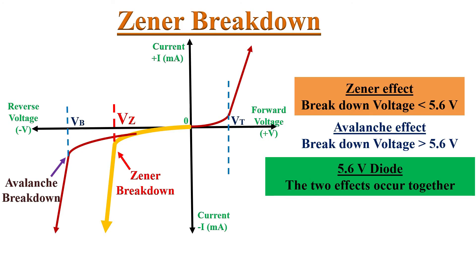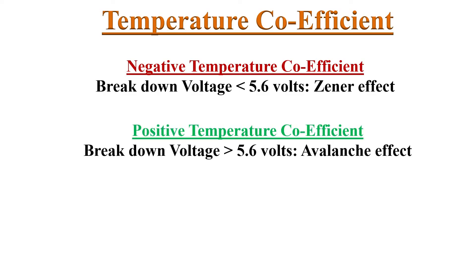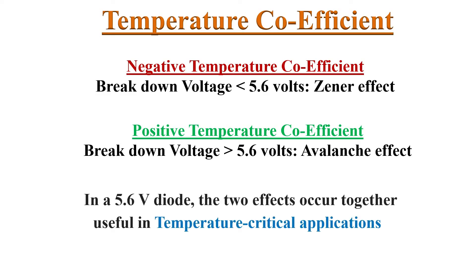Now let's discuss the temperature effect on these two breakdown effects. For diodes where Zener breakdown is predominant — that is, less than 5.6 volts — the temperature coefficient of breakdown voltage is negative. This means as temperature increases, the breakdown voltage will reduce. For diodes where the avalanche effect is predominant — greater than 5.6 volts — the temperature coefficient of breakdown voltage is positive, meaning as temperature increases, the breakdown voltage also increases. In a 5.6-volt diode, both effects occur together so their temperature coefficients nearly cancel each other, making the 5.6-volt diode useful in temperature-critical applications.